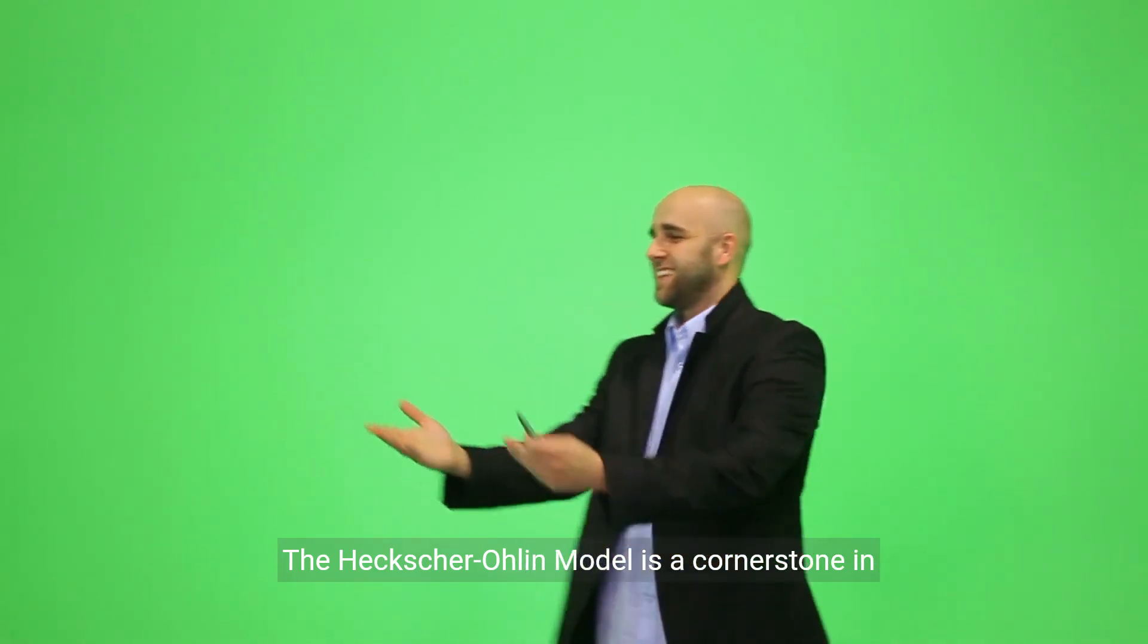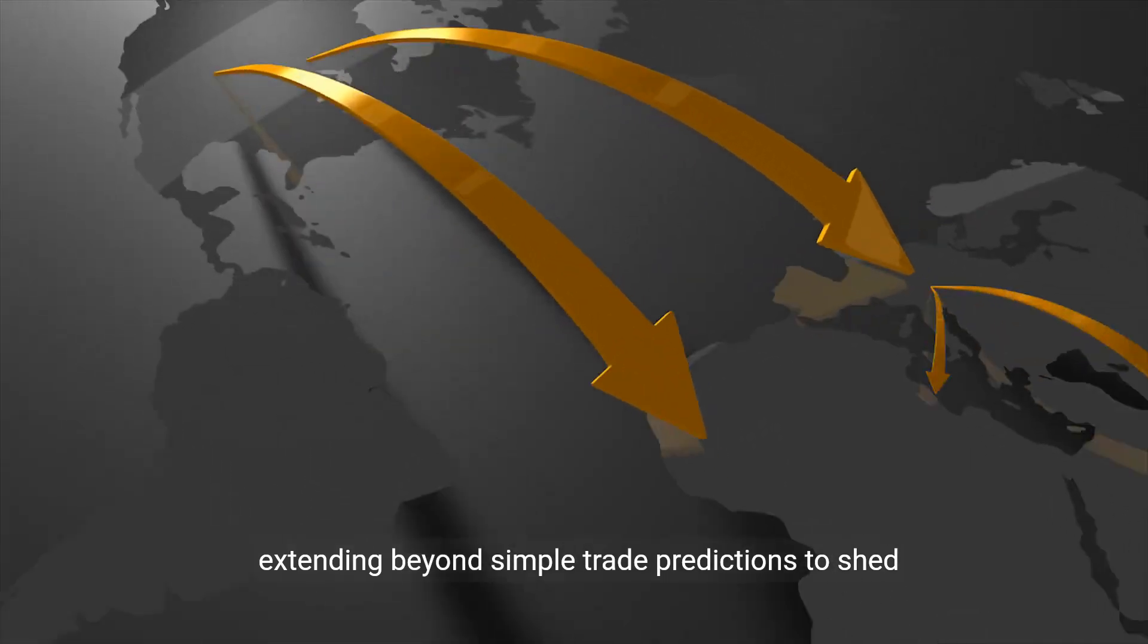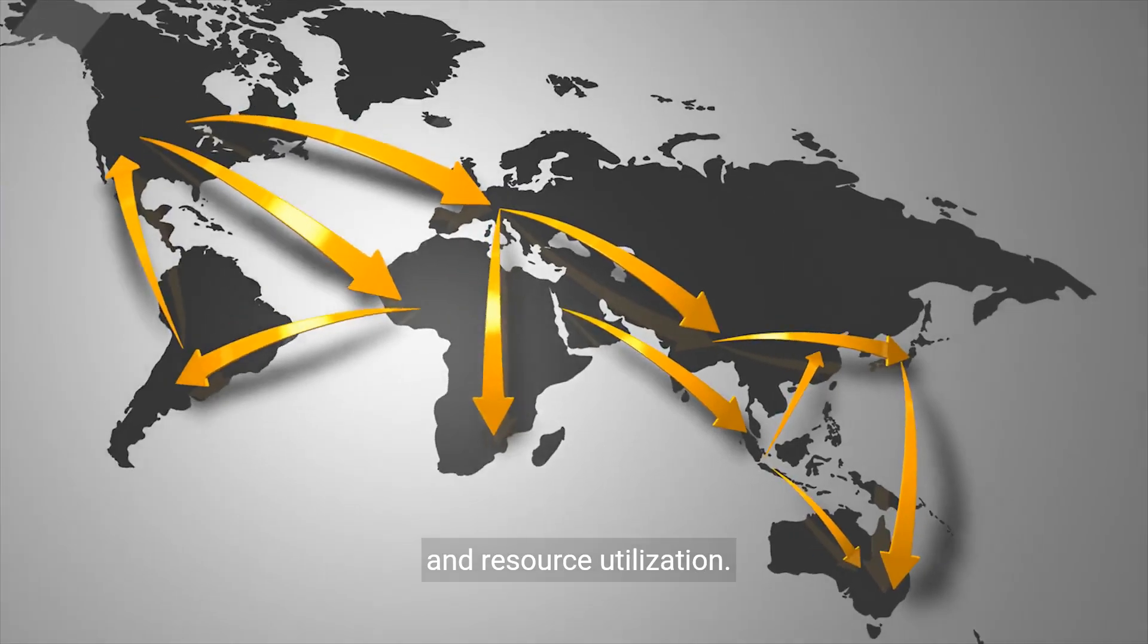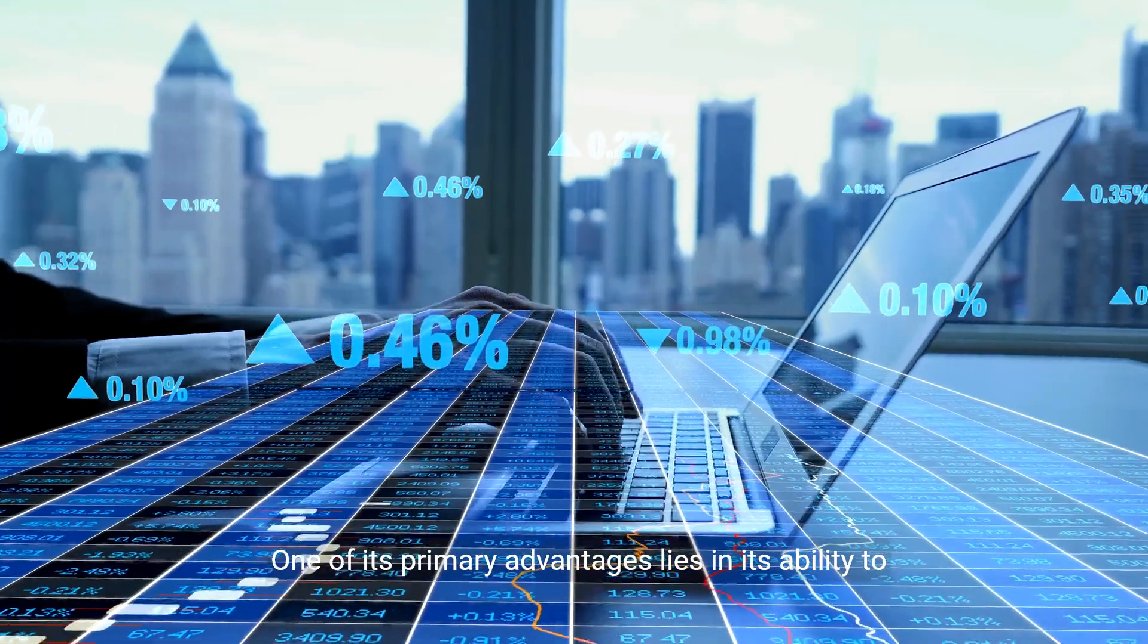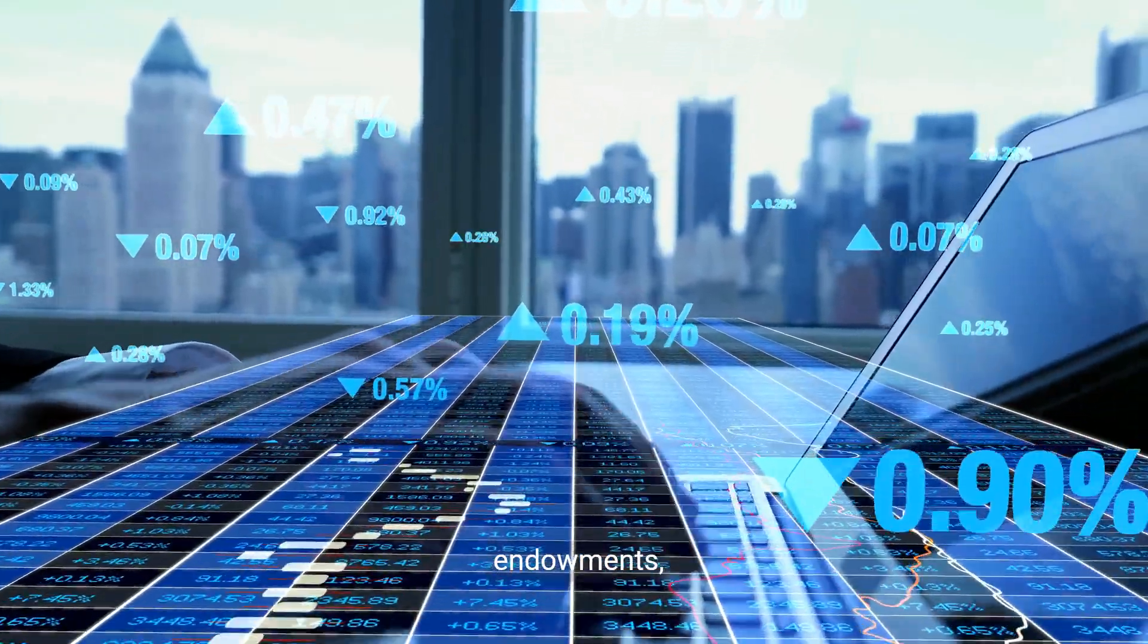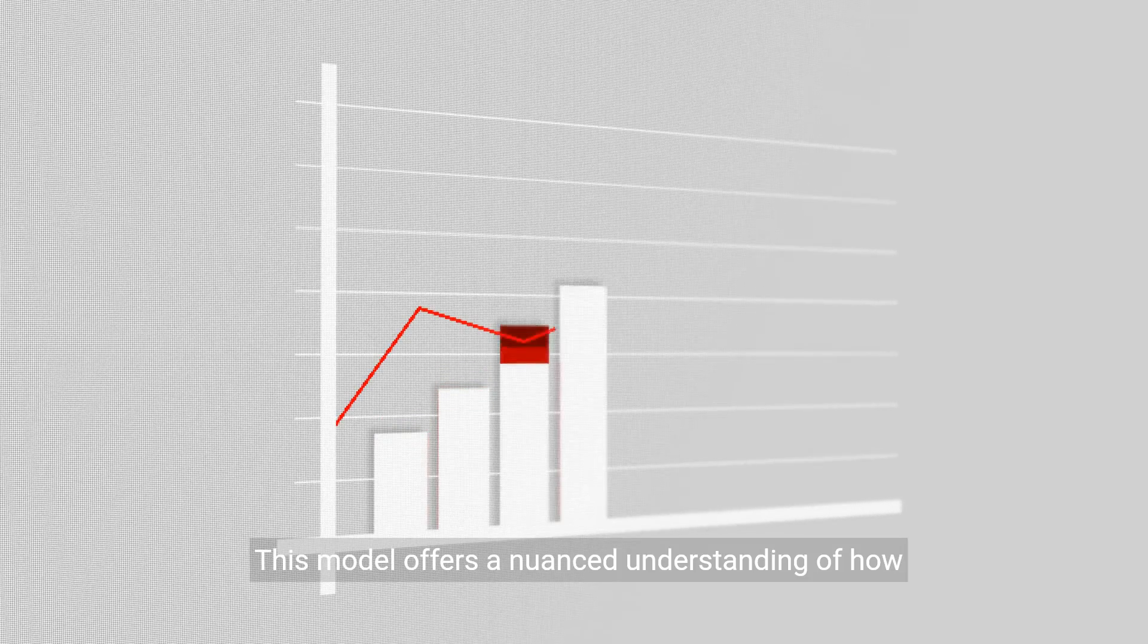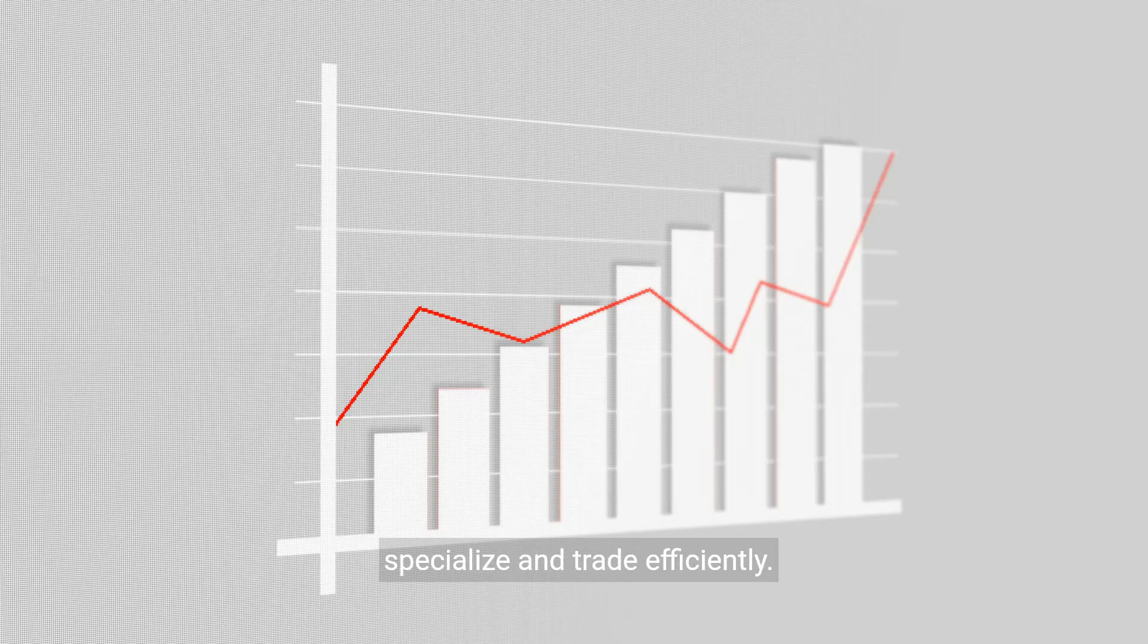The Heckscher-Ohlin model is a cornerstone in explaining international trade, extending beyond simple trade predictions to shed light on the intricate patterns of global commerce and resource utilization. One of its primary advantages lies in its ability to provide a robust framework that integrates factor endowments, making the complexities of trade more comprehensible.